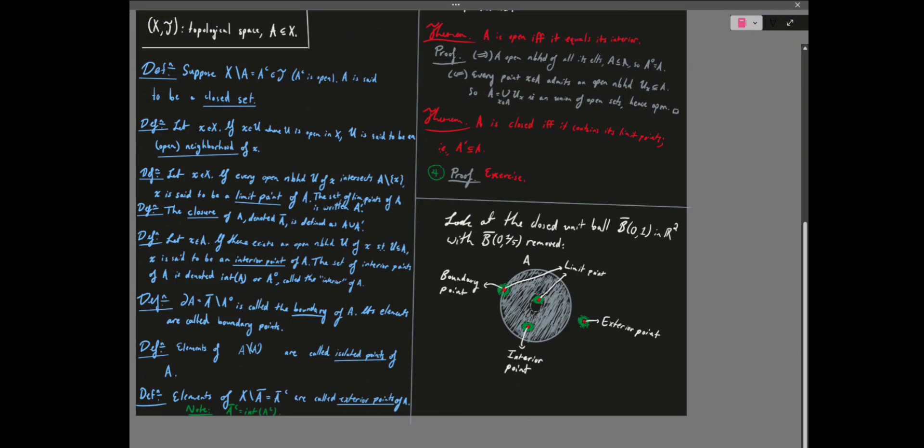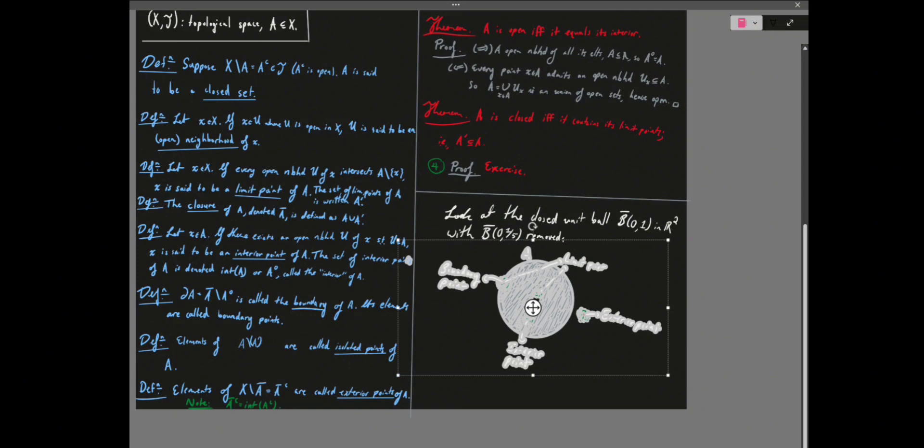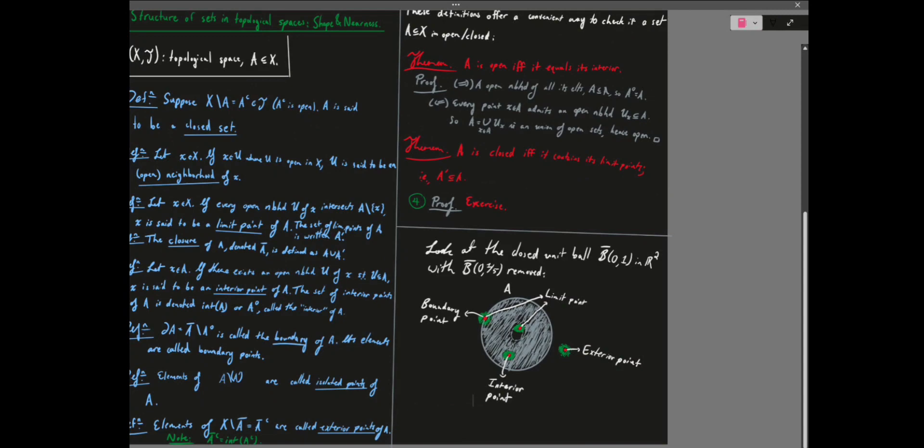Here's a little diagram showing all these basic kinds of points within a set or nearby a set. This is just a closed ball of radius one centered at zero in R2, and you remove the closed ball of radius one-fifth centered at zero.